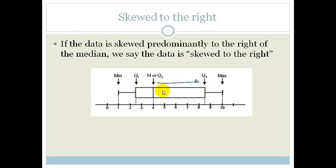What that means is that more of the data is lying to the right of the median. Please understand we're not looking at the whiskers. We're only looking at the majority of the data, which is in the box.